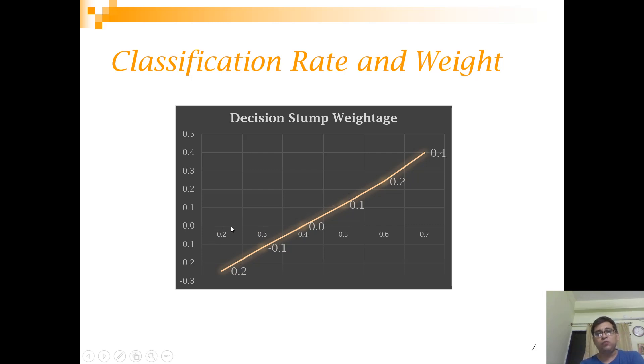Let's quickly see the effect of this ratio or misclassification on the decision tree weight. As you see, when your misclassification is high - you're correct only 0.2 times - your weight is very very less, it's negative, so it will hardly matter. But when you're at 0.7, 0.8 range, your weightage increases to 0.1, 0.2, 0.4 this way. That's how it works.